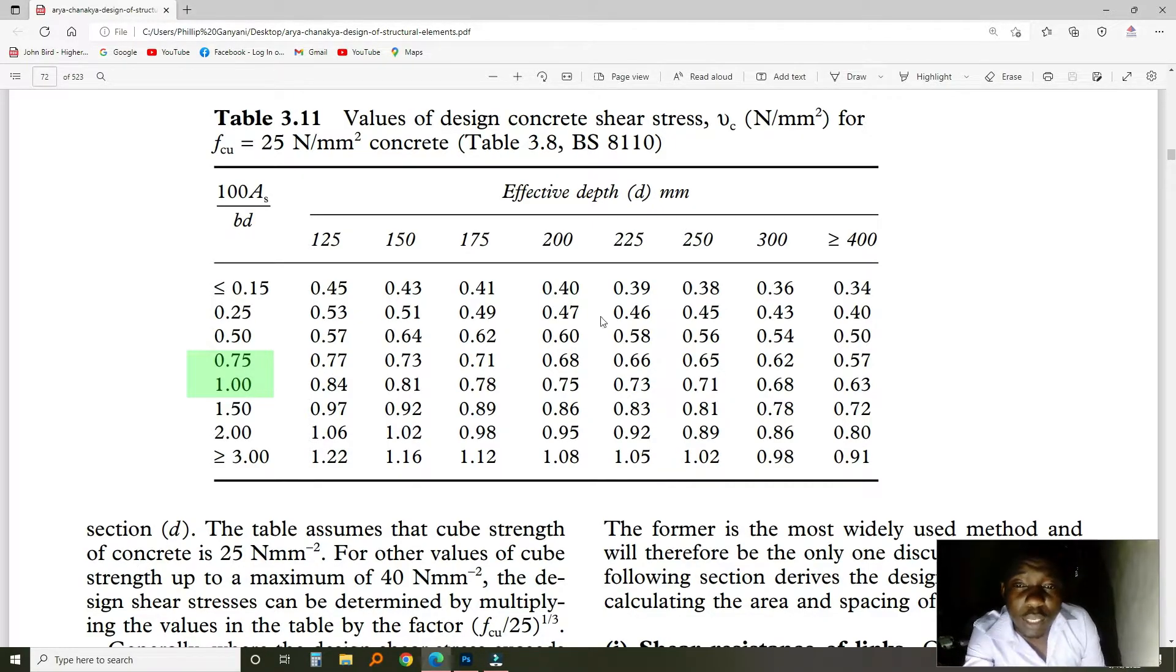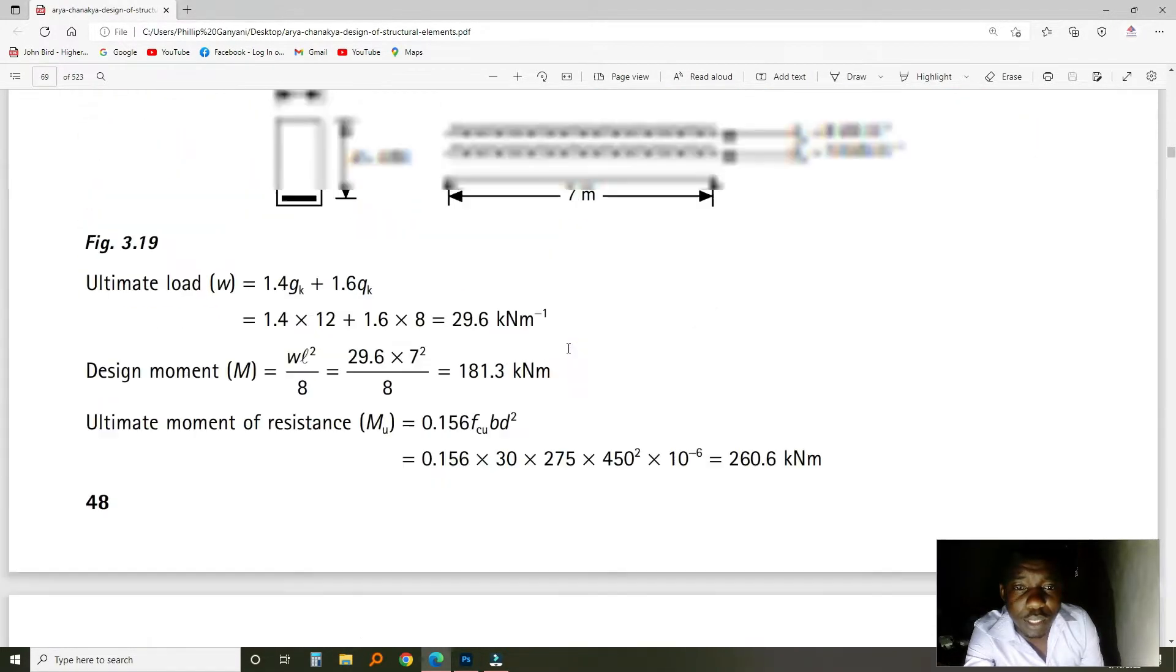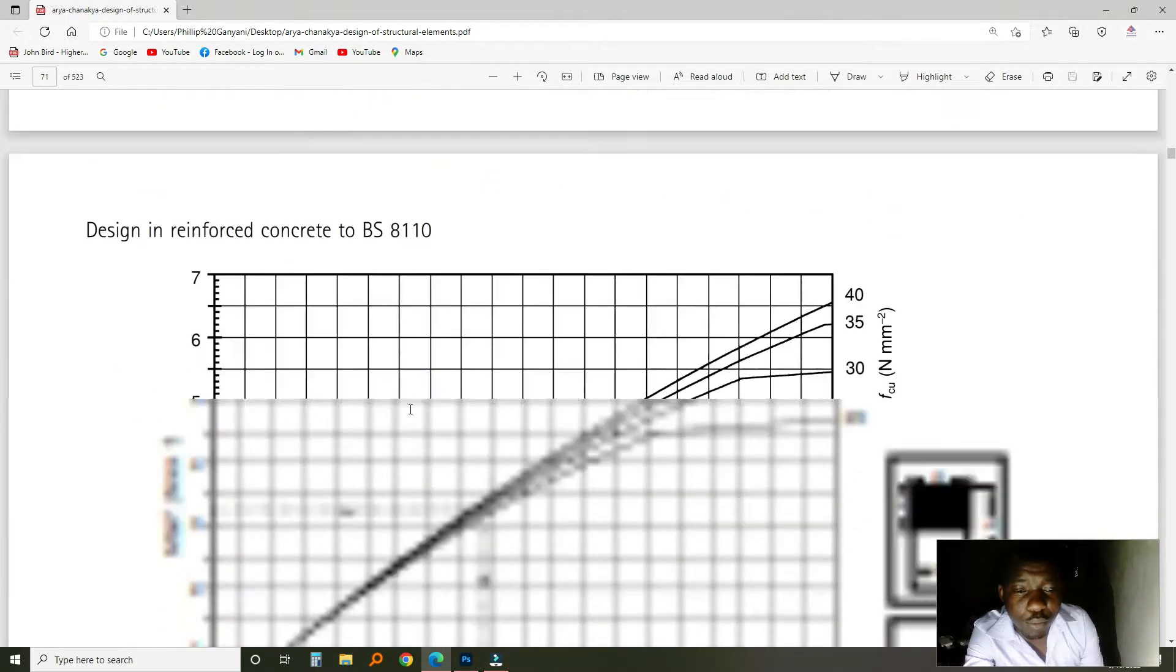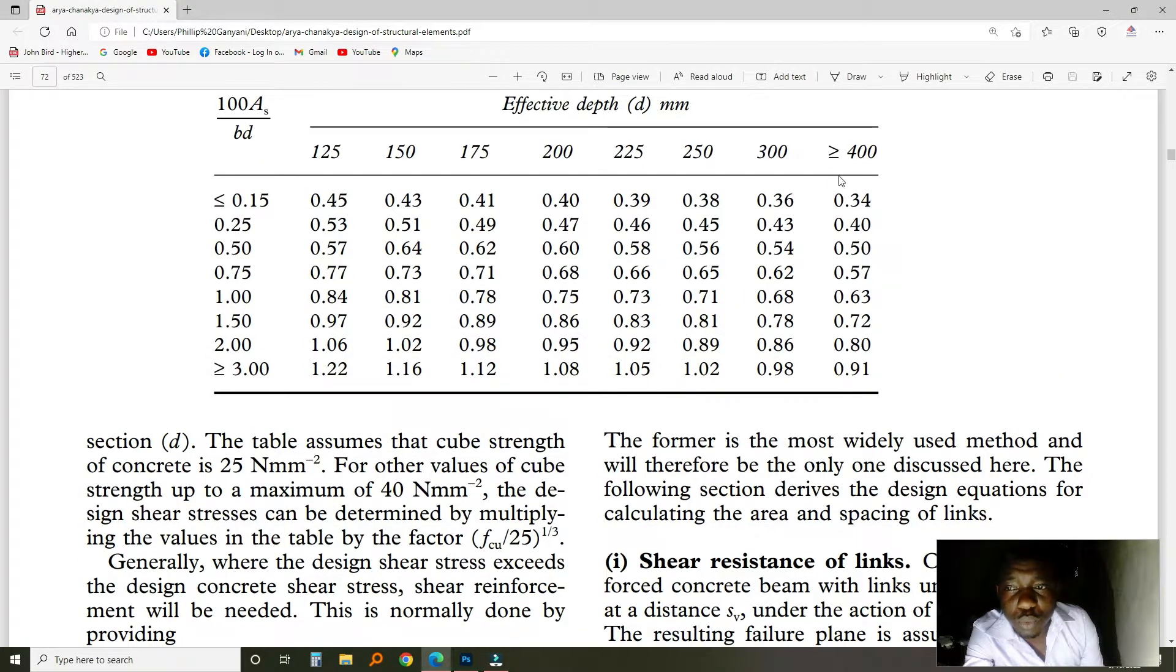Then we are looking at the depth of the beam. The depth of the beam was, let me go back a bit. The depth of the beam was 450. For 450, it is easy. I think this is just an example. You look at this column here. Since it is greater than 400, you are limited to these values here. So if you follow this, you come up with this value, which is 0.75, then the higher value is 0.65. So, your answer should be between these two numbers.